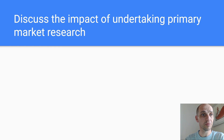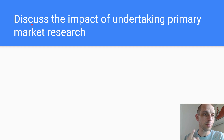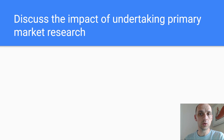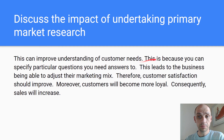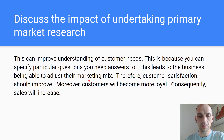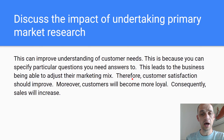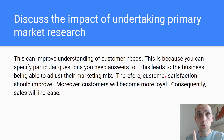Discuss the impact of undertaking primary market research. Now, unlike the first questions which were 'explain' using IDLT — identify your point, leads to, therefore — now we've got a six-mark discuss question. So: identify, this is because, this leads to, therefore, moreover, consequently. Make sure you follow those strands of analysis and you'll be able to write a tip-top answer. Can improve understanding of customer needs — this is because you can specify particular questions you need answers to. This leads to the business being able to adjust their marketing mix. Therefore, customer satisfaction should improve. Moreover, customers will become more loyal. Consequently, sales will increase.